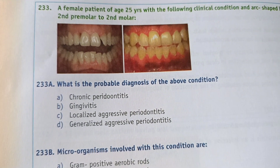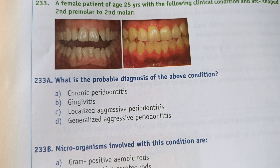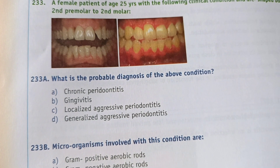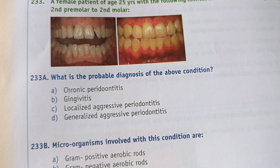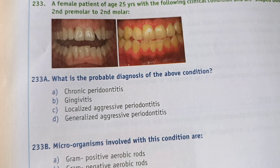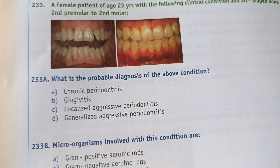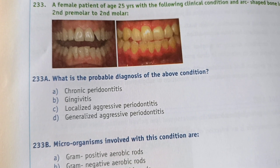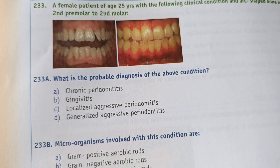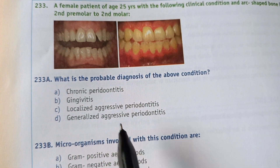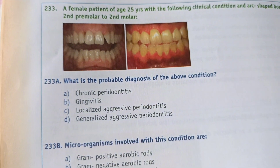It is localized because it involves less than six teeth. The difference between localized and generalized is: in localized, less than or up to six teeth are involved; in generalized, more than six teeth are involved in the oral cavity. So the right answer is localized aggressive periodontitis.